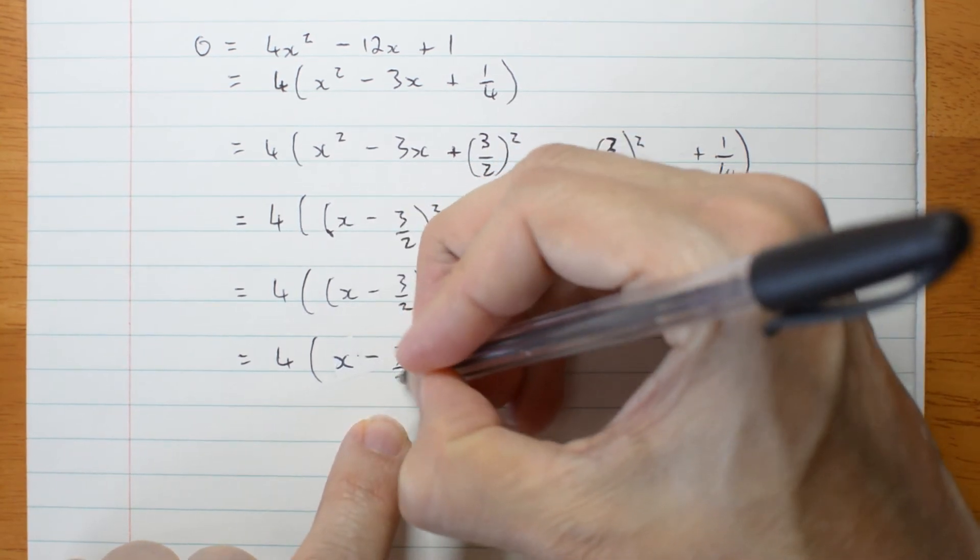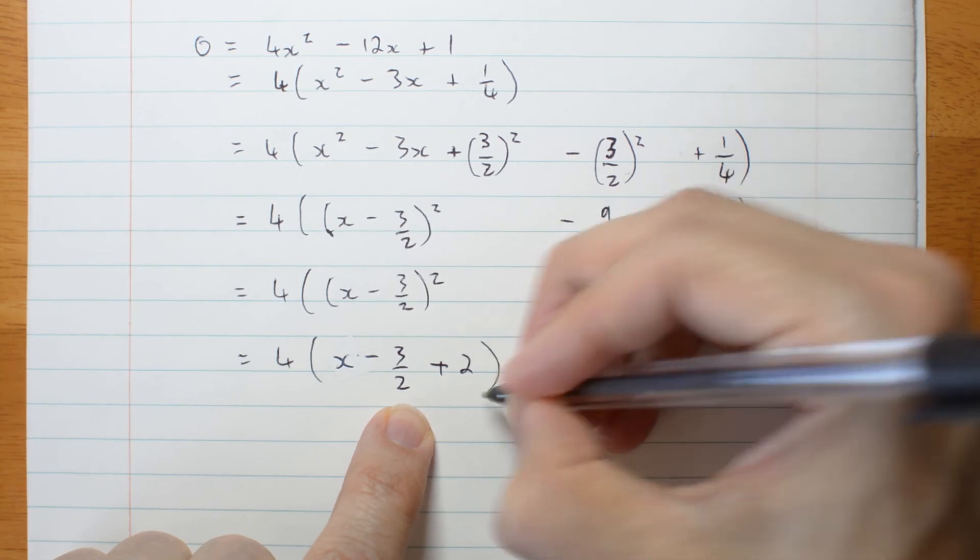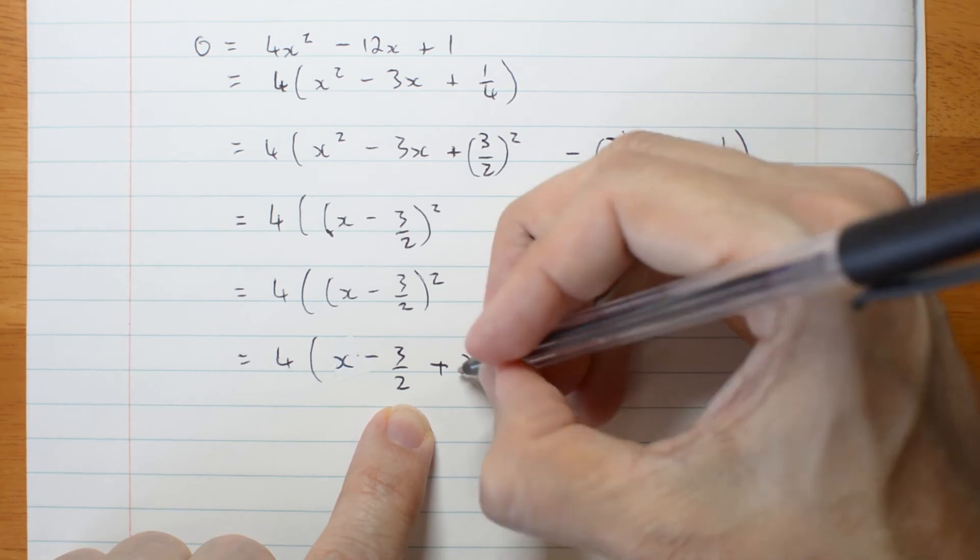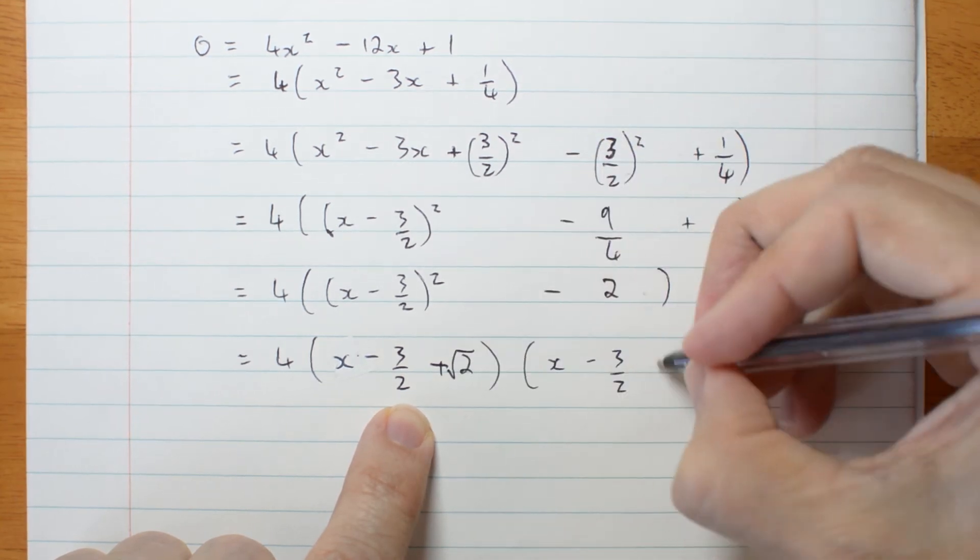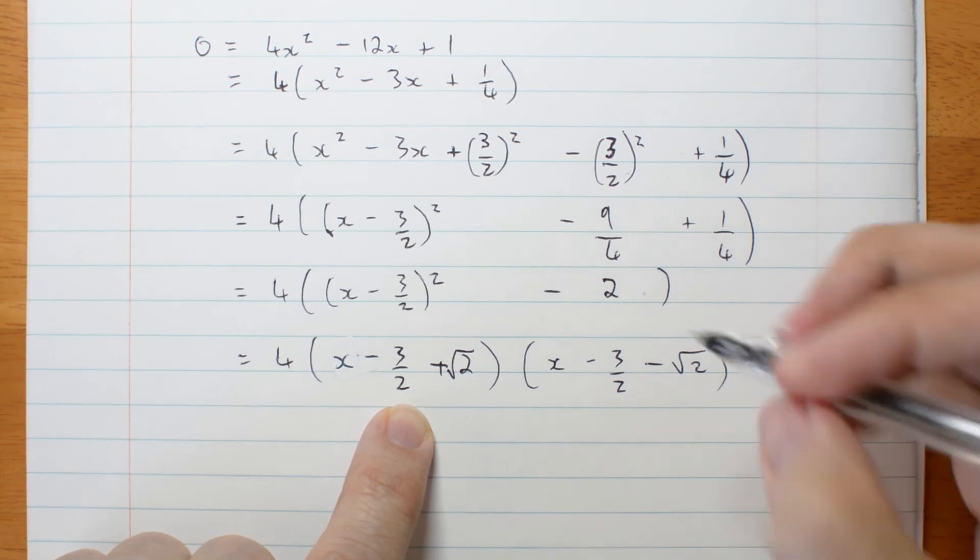x minus 3 on 2 plus root 2, x minus 3 on 2 minus root 2. Difference of squares, so I need the square root of 2.